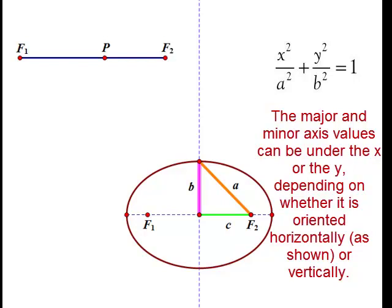If it was a vertically oriented ellipse, then the a's and the b's would end up being switched such that the a would be underneath the y value and the b would be underneath the x value.